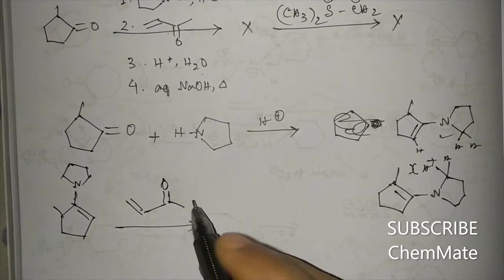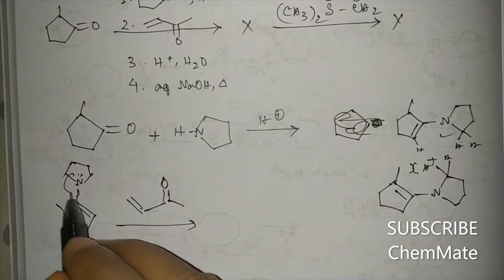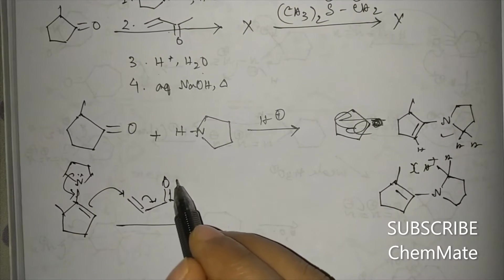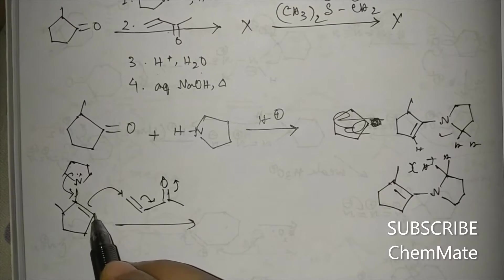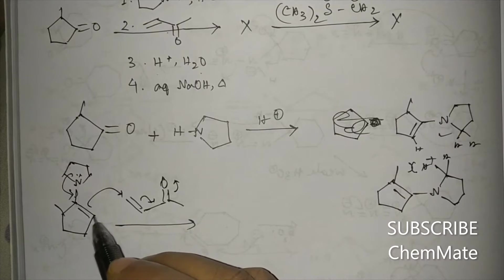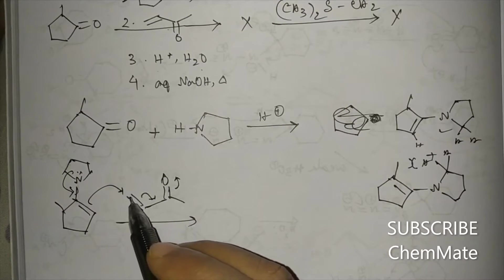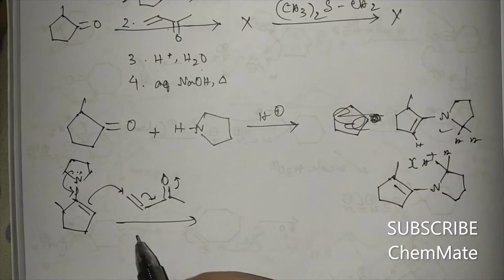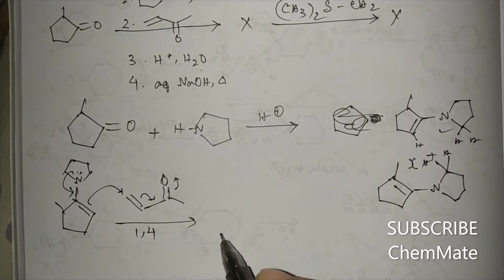Now if this enamine is treated with an alpha-beta unsaturated ketone, Michael addition will take place. Michael addition is a 1,4-addition. This is a carbon nucleophile attacking a soft electrophilic center, so 1,4-addition will take place.